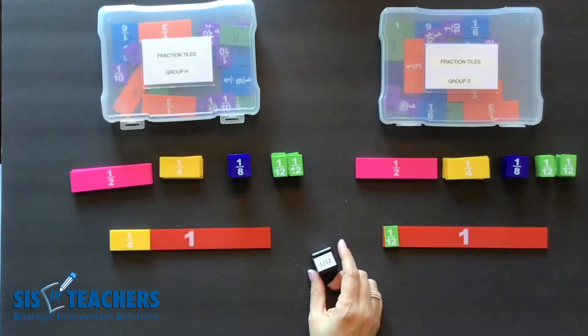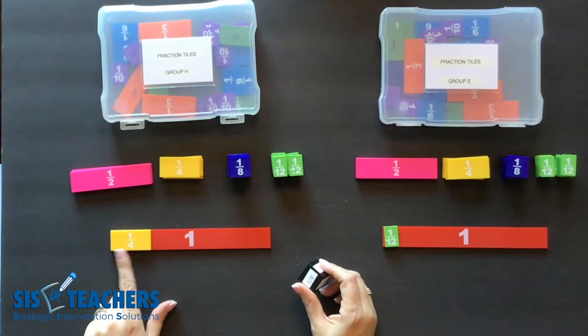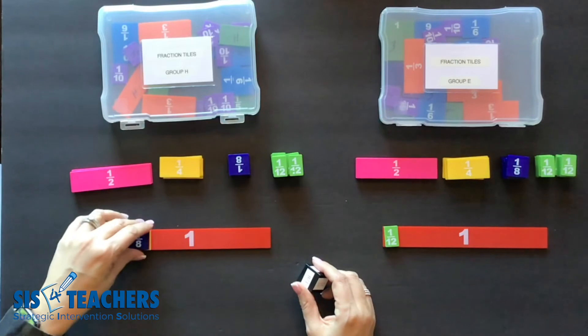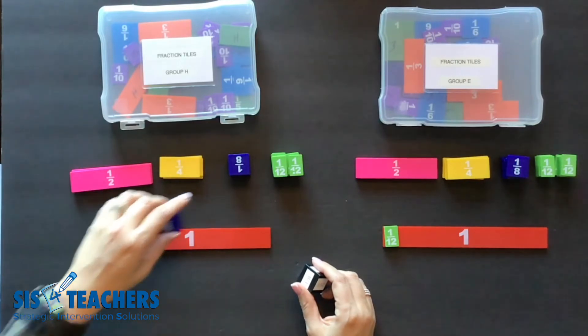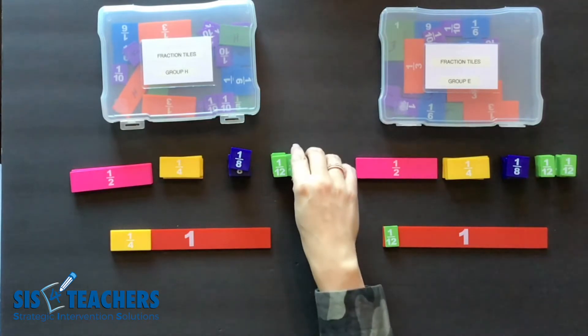In this game you can't do an equivalent, meaning if I were to have the one fourth I couldn't put another fraction that was equivalent to that fraction such as in this case I might be able to put on two eighths. You only can do what's actually rolled. So I'm going to go ahead and roll twelfth.